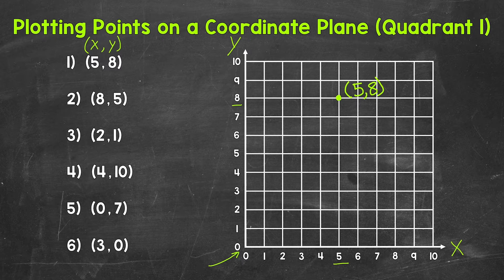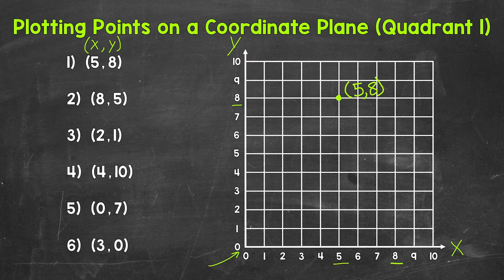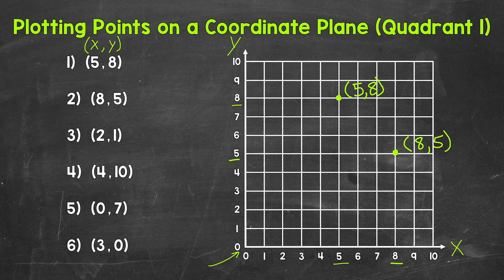Let's move on to number 2, where we have 8, 5. Now this is not the same thing as number 1 — order matters. 8 is now our x-coordinate, and 5 is now our y-coordinate. So we go over 8 and then up 5. We plot this point right here, so this is 8, 5. You can see the difference between numbers 1 and 2. Although we have the same numbers, 5 and 8, order matters, and we don't plot those points in the same place.